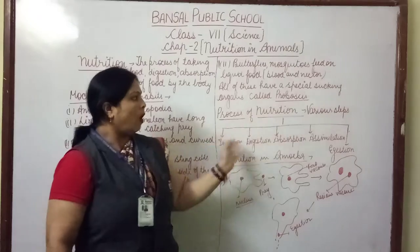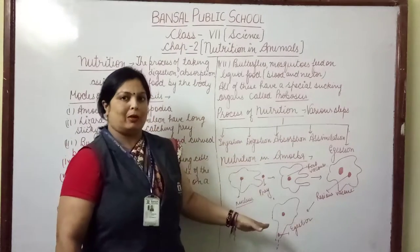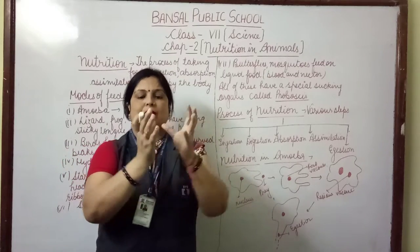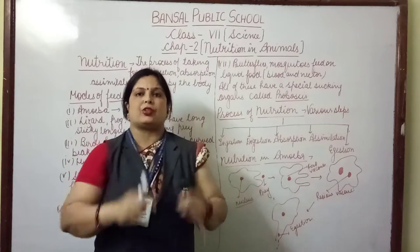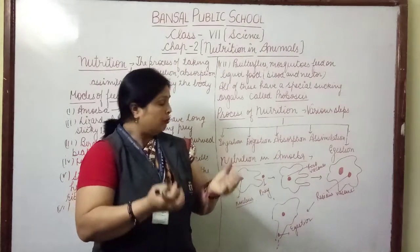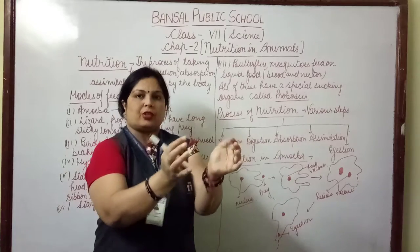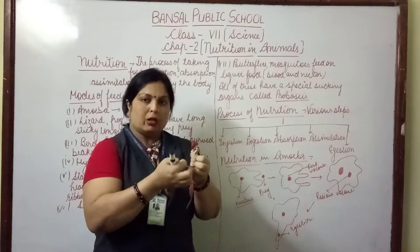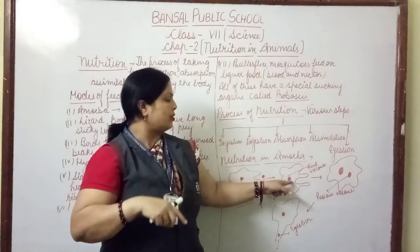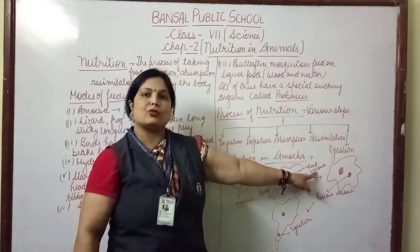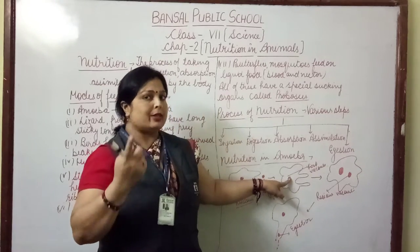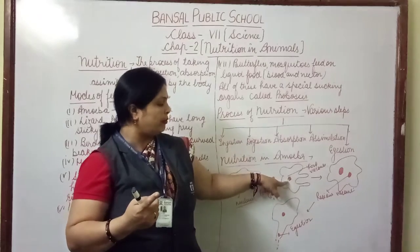How do these steps take place in amoeba? Amoeba forms a cup-like structure known as pseudopodia. When food comes near, the pseudopodia form a cup-like structure and receive the food. When food enters the body, amoeba forms a vacuole-like structure and this vacuole-like structure is known as a food vacuole. Digestive enzymes surround the food vacuole, which help in the process of digestion.